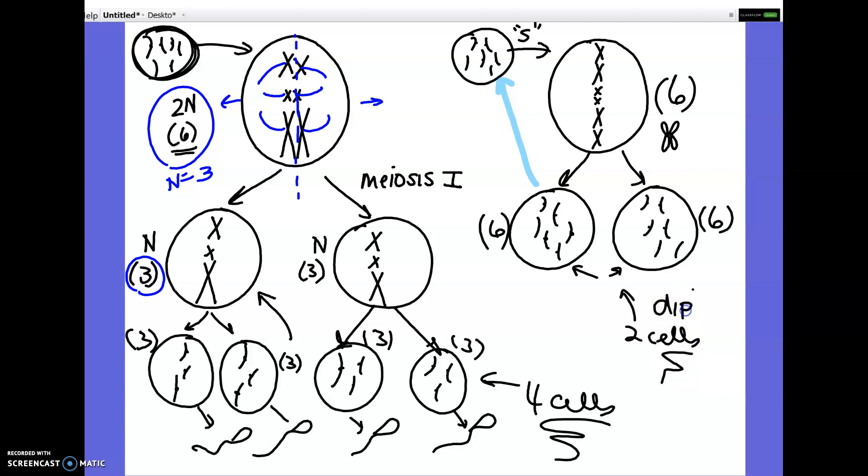These cells that we made were diploid, and they were identical to each other and to the original cell. These cells are haploid, and they are actually not identical to each other or the original cell. So very, very, very different processes.